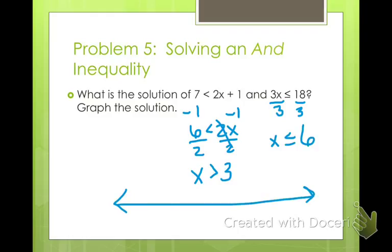I'm going to make a number line. Let's make this 4, 3, 2, 1, 0, 5, 6, 7. Alright, so I'm going to take and graph these individually.